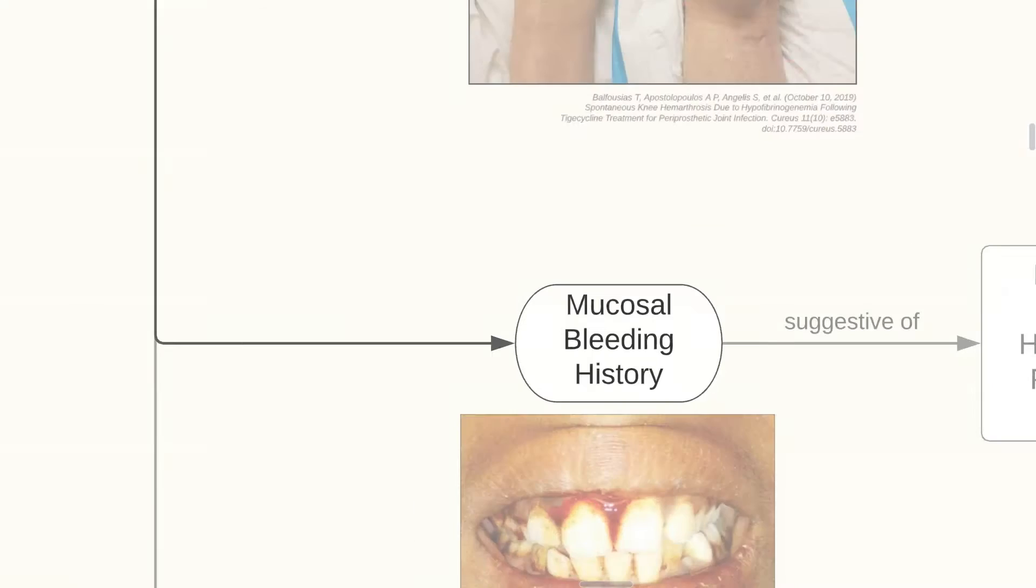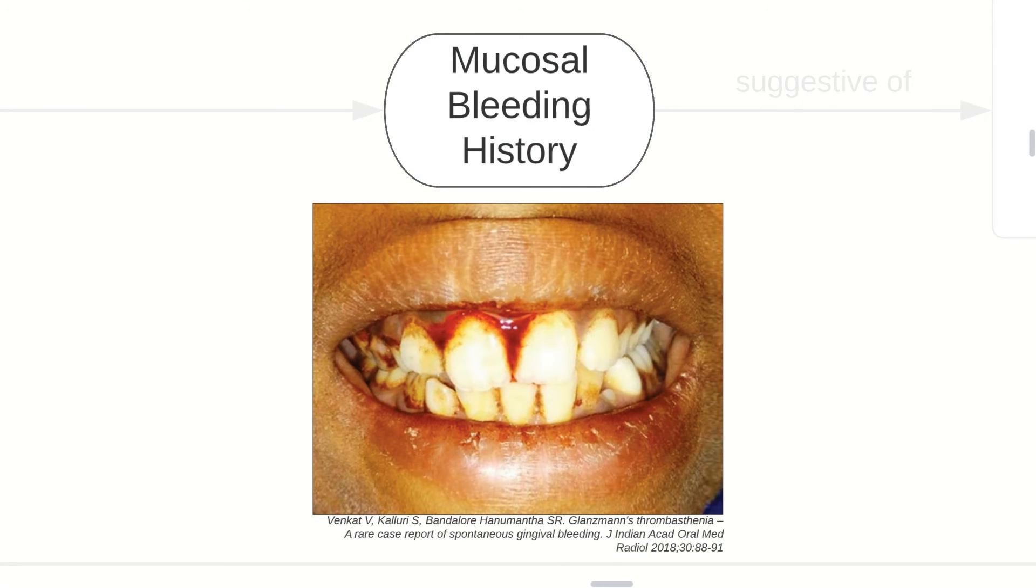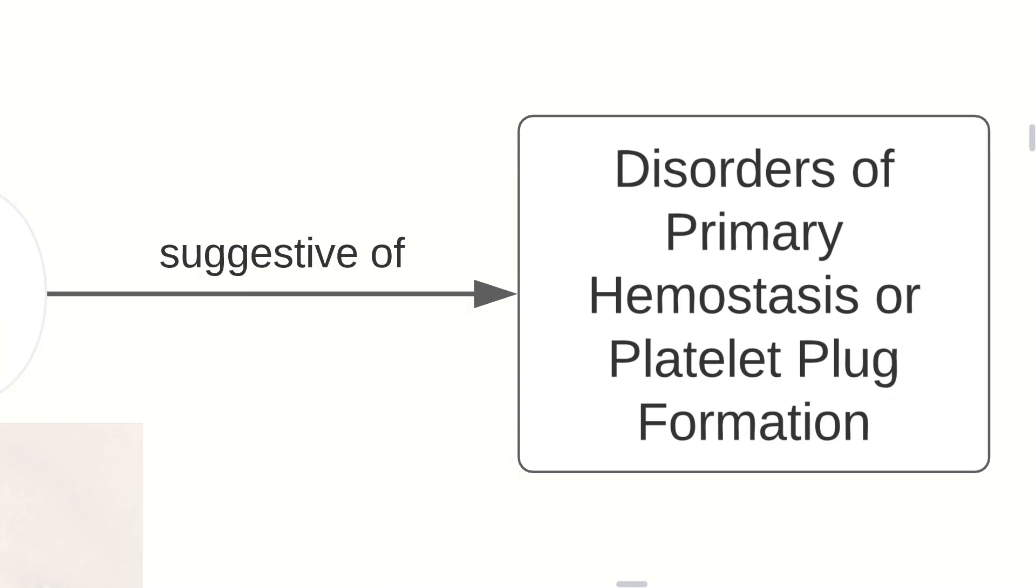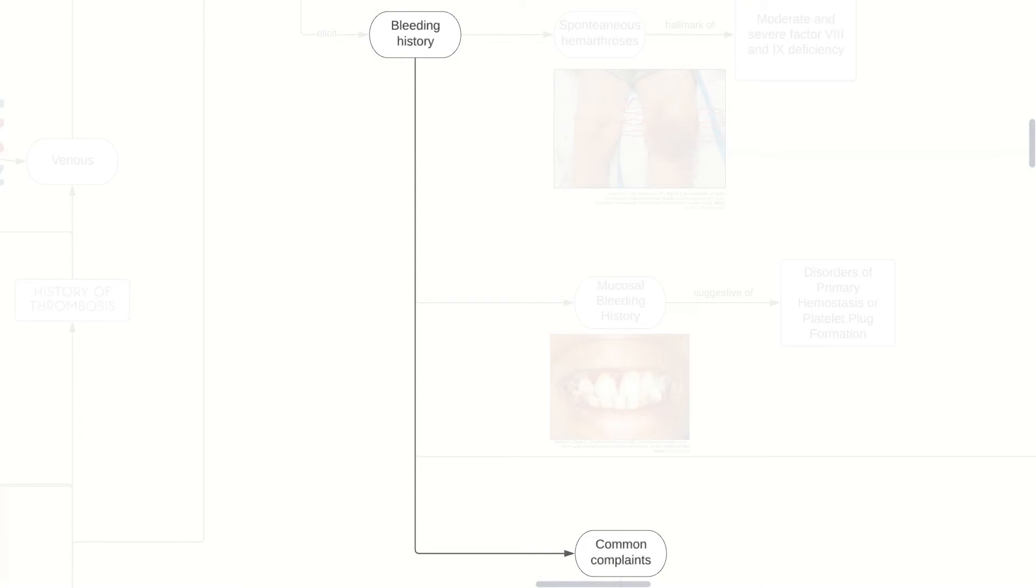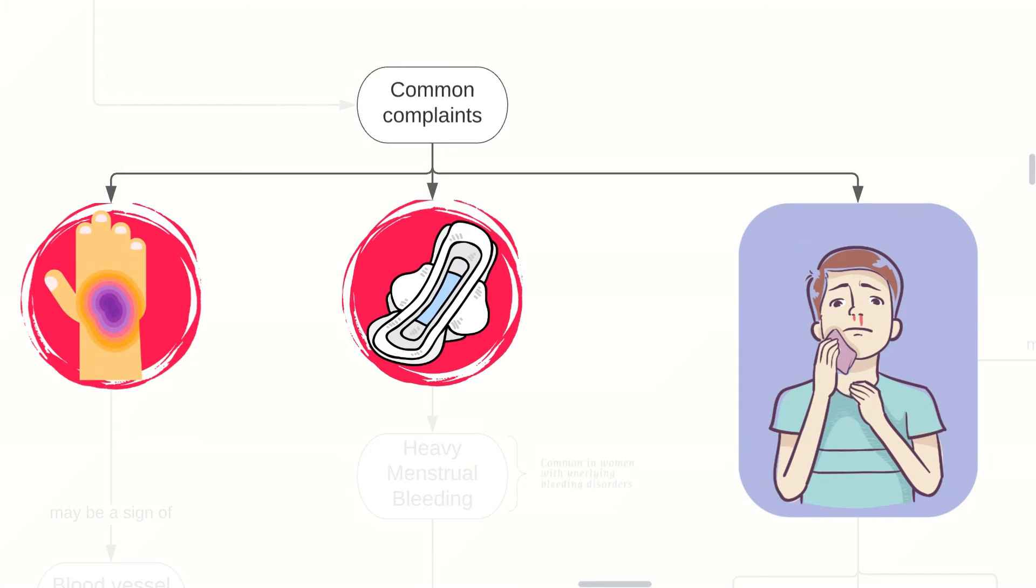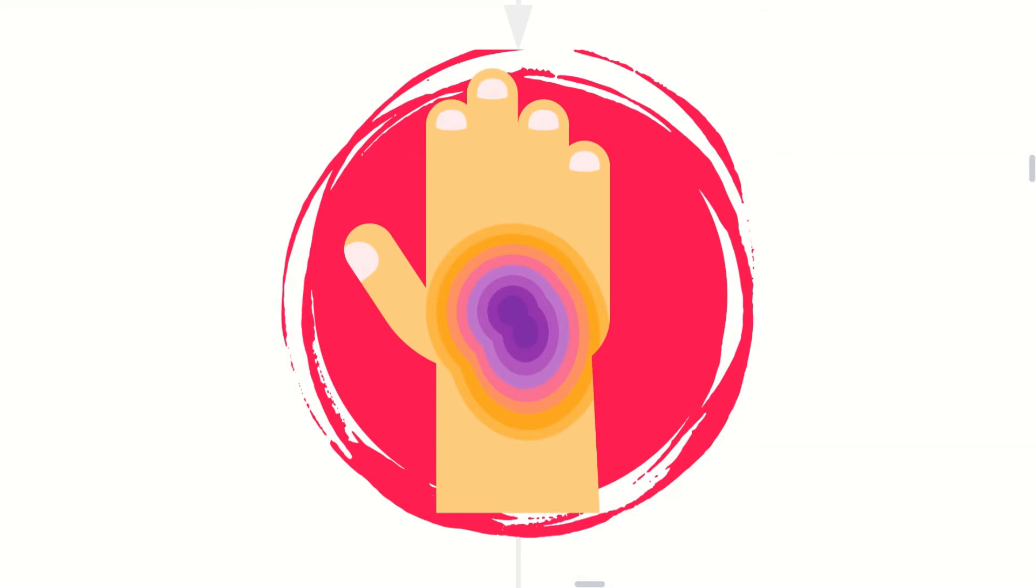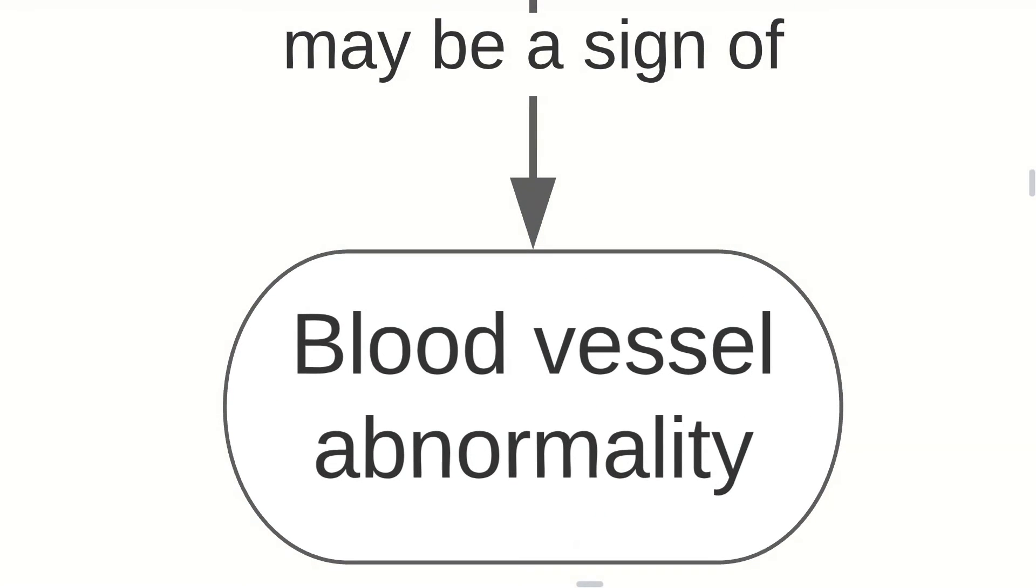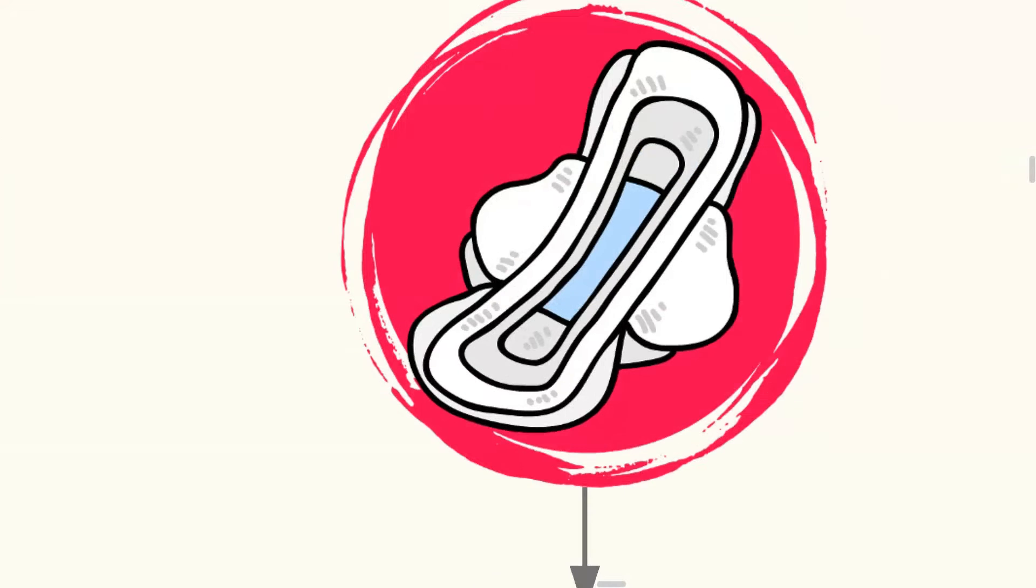Mucosal bleeding history, as seen in this picture, may be suggestive of disorders of primary hemostasis or platelet plug disformation. History may have many complaints such as easy bruisability, heavy menses, and epistaxis. Easy bruisability may be a sign of a blood vessel abnormality, once you exclude domestic violence, of course.